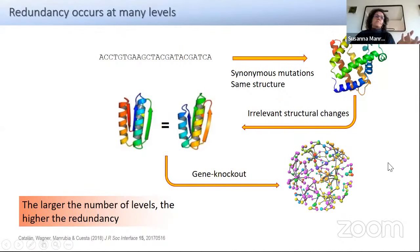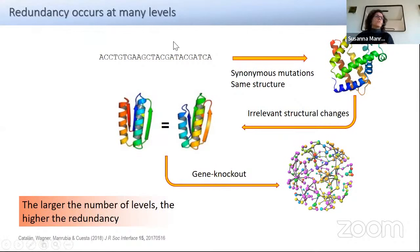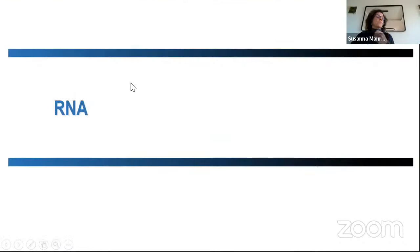At the same time, redundancy gives plasticity because it can support a loss in the face of environmental change. For today, we are only going to use one level of genotype-to-phenotype maps, which is the case of RNA.